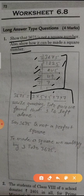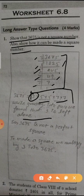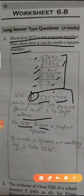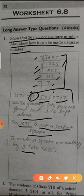Now see the factors. There are 2 pairs and 3 is left. While grouping into pairs we found that 3 is left alone. There are no pairs of 3. So 3675 is not a perfect square. To make a square we multiply by 3 into 3675.